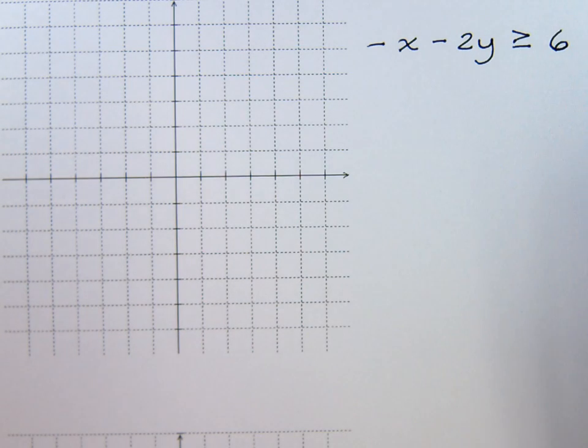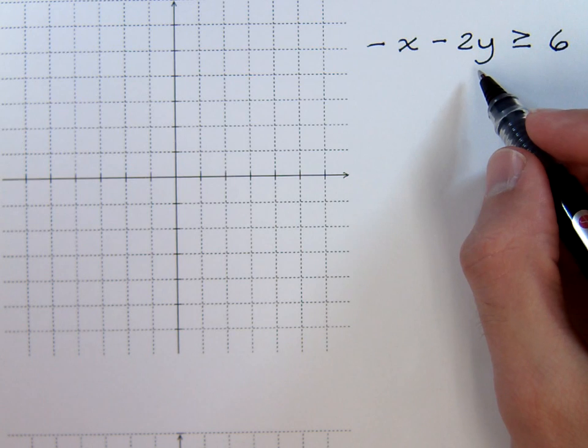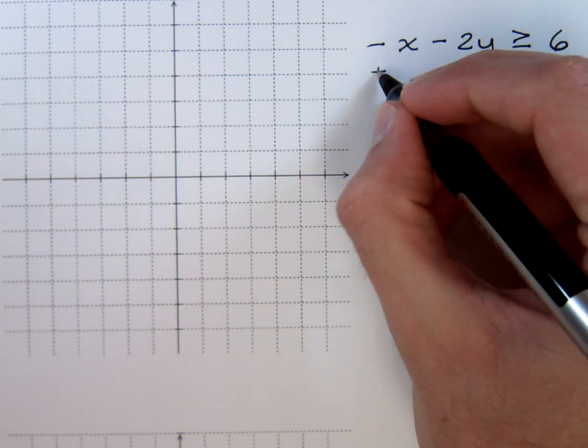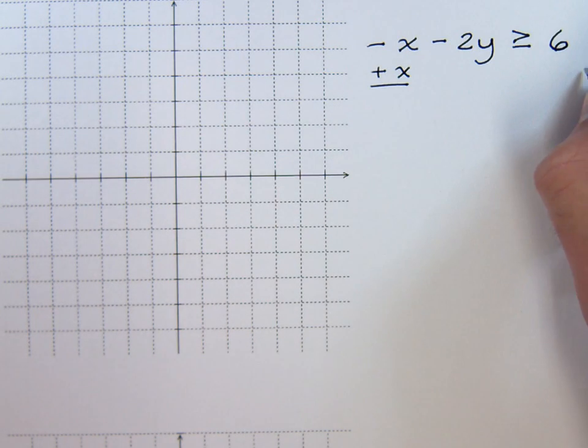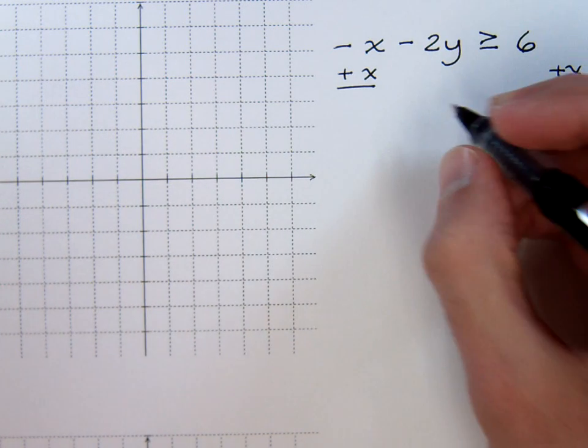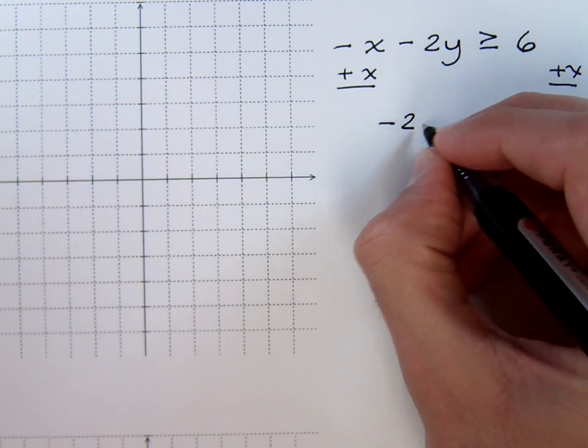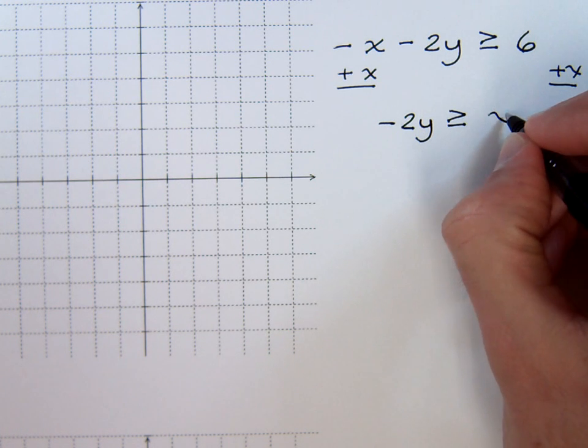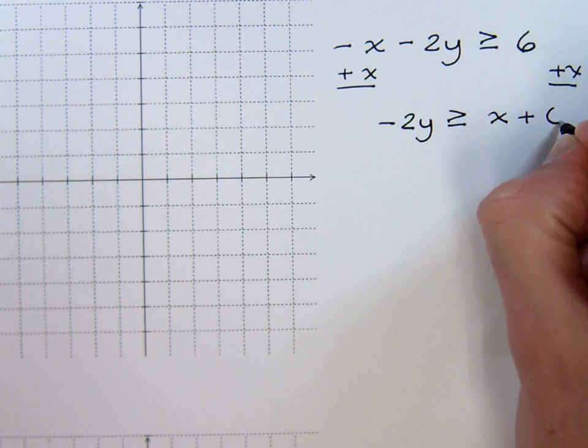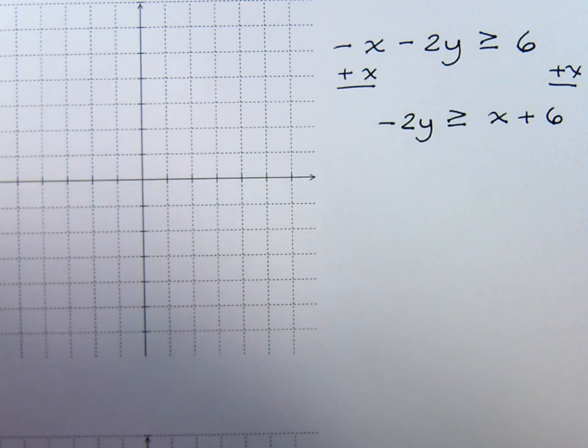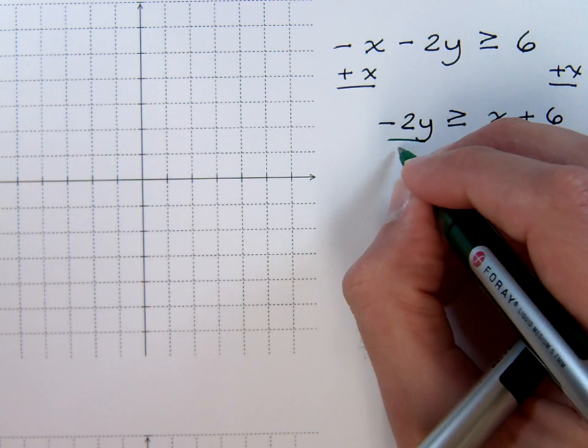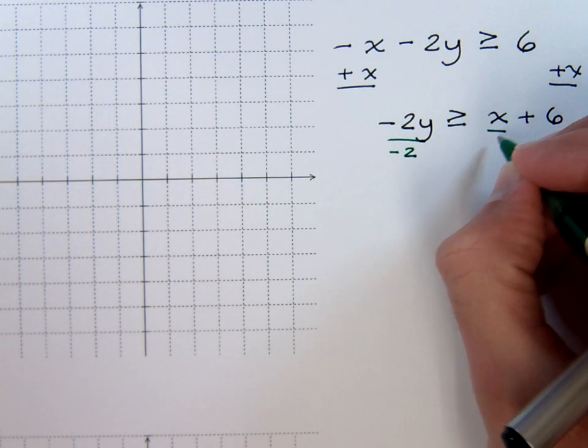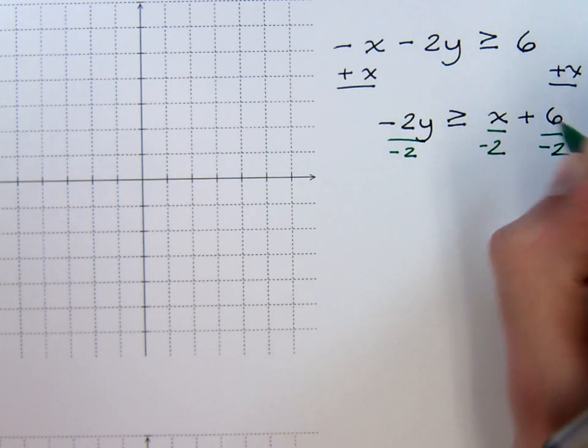So I think the best thing for us is to go ahead and solve this inequality for y. Now first things first, just add the x to both sides so we have negative 2y is greater than or equal to x plus 6, and then divide everything by the coefficient of y. So divide everything by negative 2.